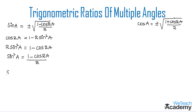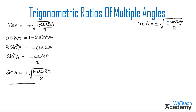That implies we can write sin a will be equal to plus or minus under root 1 minus cos 2a by 2. Hence, we derived the formula for sin a which is equal to plus or minus under root 1 minus cos 2a by 2.